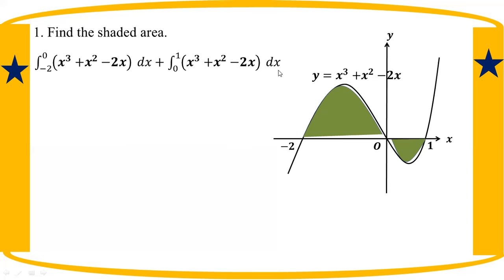So here, this area is 0. A² squared minus 2 plus 0 and 0. When you do from 0 to 1, A² squared minus 2 is 0 — that area is located in all of the area.